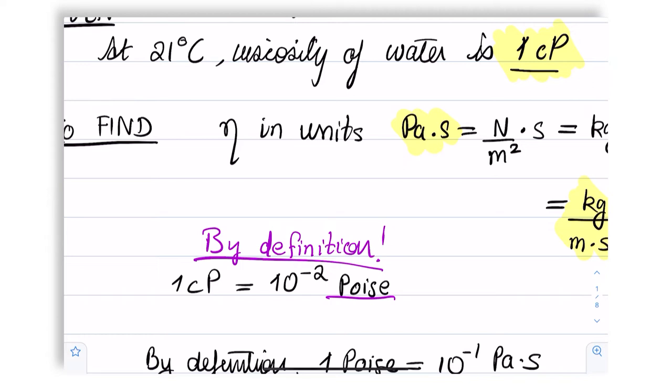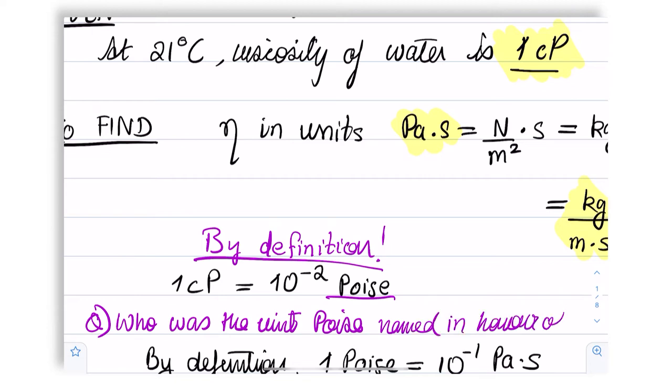As a pop quiz question into the history of fluid mechanics, I want you to find out who was the unit poise named in honor of. In other words, what was this person, what did he or she discover, and why is this unit called that? So we can also write one centipoise is equal to 0.01 poise.